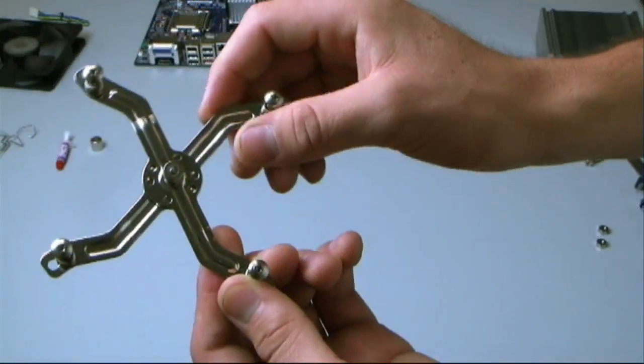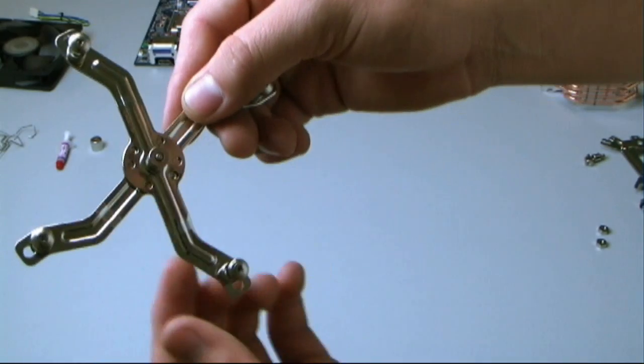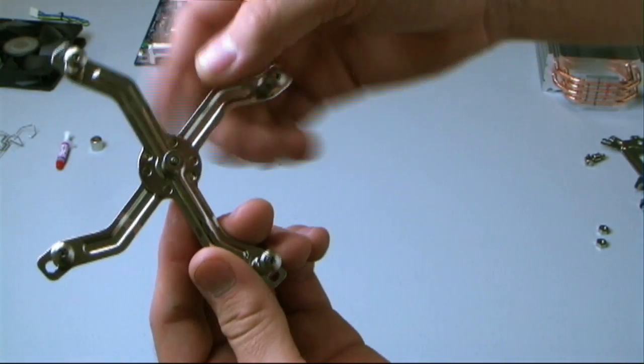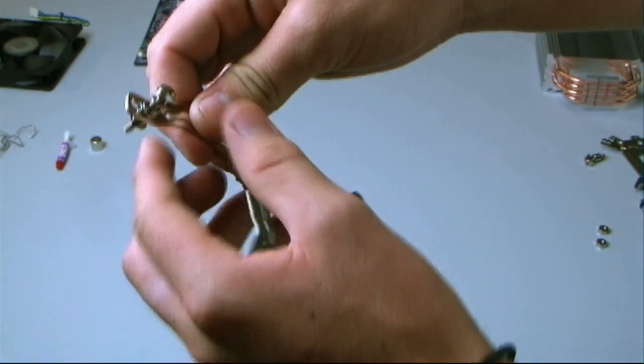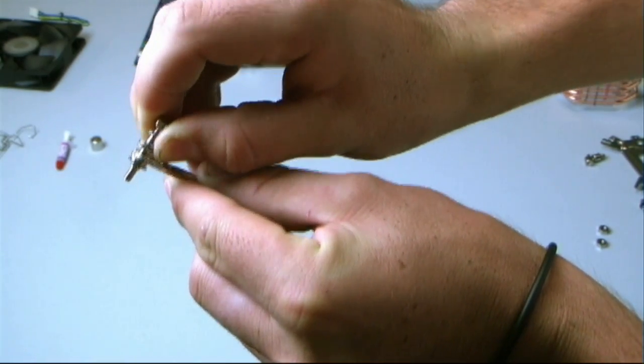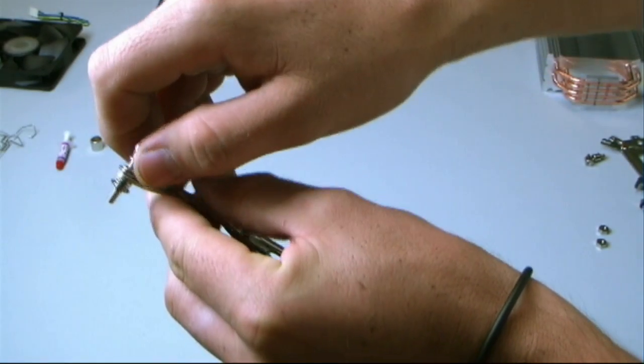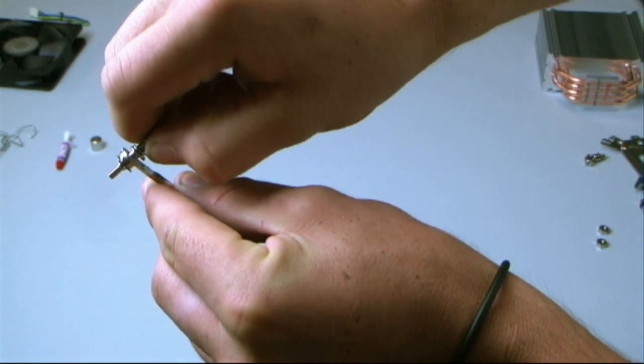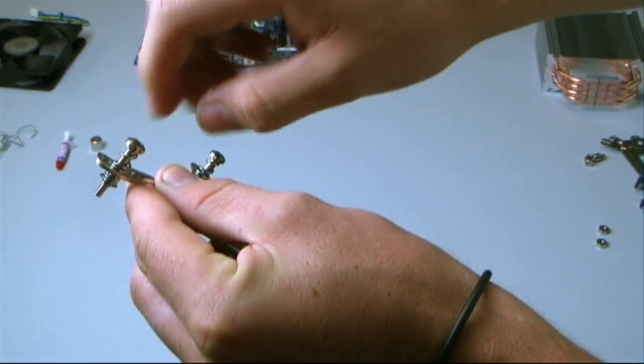This is the universal retention plate. This would be for your Intel chips, 775. If you want to use the 1366, simply pull on the screw and push it out towards the very end. And vice versa. If you want to go to 775, push it, release.